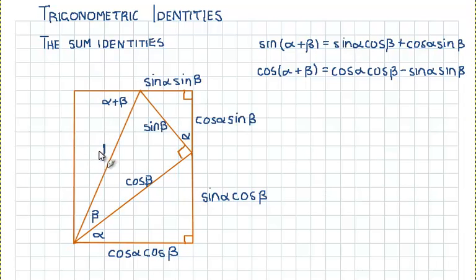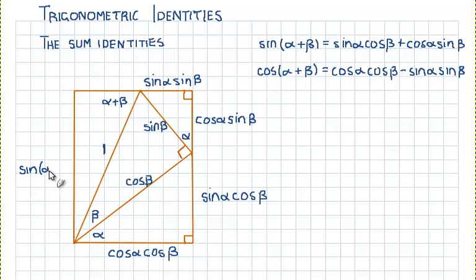The last triangle we have to work out is the outer triangle. This triangle has a hypotenuse of length 1 and an angle of alpha plus beta. That means the length of the opposite side is sin(α + β), and the length of the adjacent side is cos(α + β).